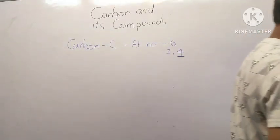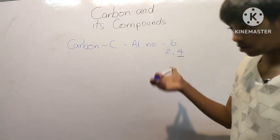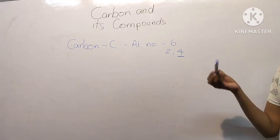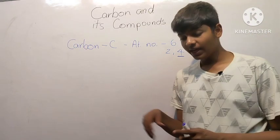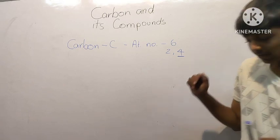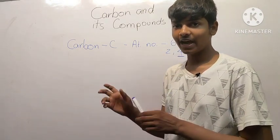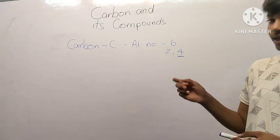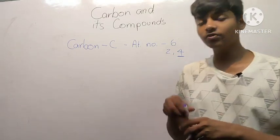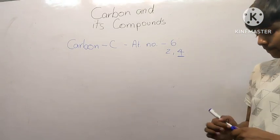Now let's talk about its nature. Since carbon is a non-metal, it would be electronegative. It might seem that it will gain 4 electrons. We know that the basis of reactivity is to complete its octet — any element reacts with another substance to gain stability or a complete shell.